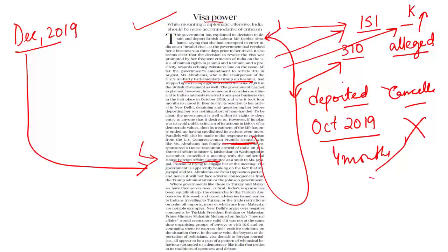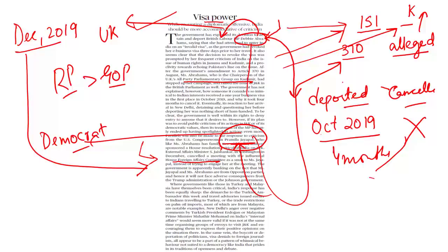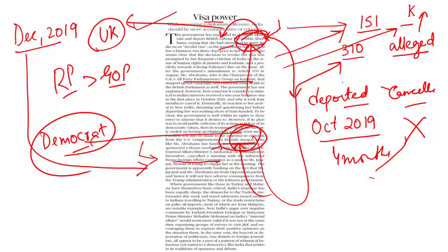It is important to note that Debbie Abrahams is part of the Labour Party, which is in opposition in the UK, and Pramila Jayapal is a Democrat, while US President Donald Trump belongs to the Republican Party. Therefore, India's actions of protesting against these opposition politicians will not impact India's relationship with the UK or the US, since they are not part of their respective governments.